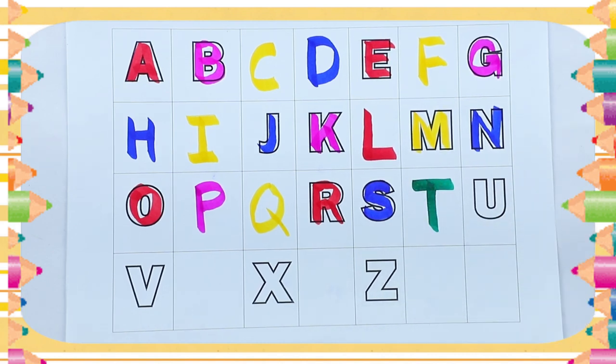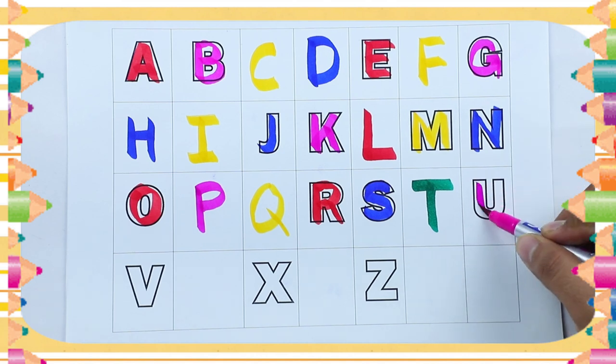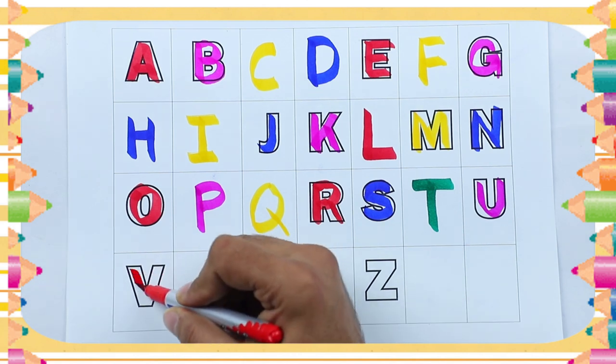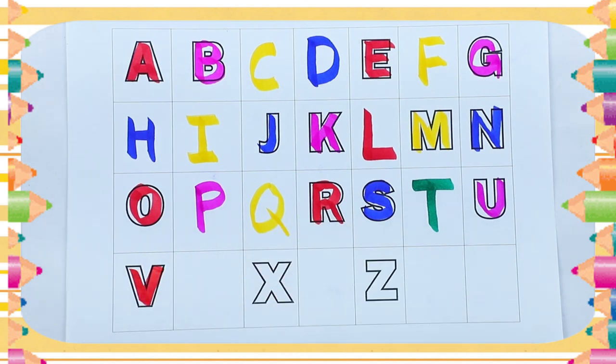Green color, T. Pink color, U. U for umbrella. Red color, V. V for van.